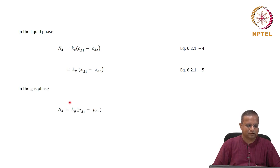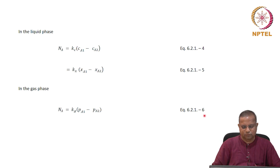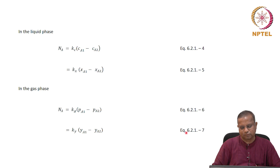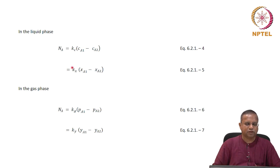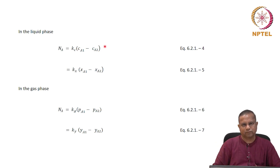In the gas phase, the flux of A (which is oxygen) is kg times Pa1 minus Pa2 in the gas bubble — equation 6.2.1-6 — which can be written in terms of mole fractions in the gas phase as ky times the mole fraction at 1 minus the mole fraction at 2, equation 6.2.1-7. These are the flux definitions from our formulation: transfer coefficient times certain difference in the driving force.